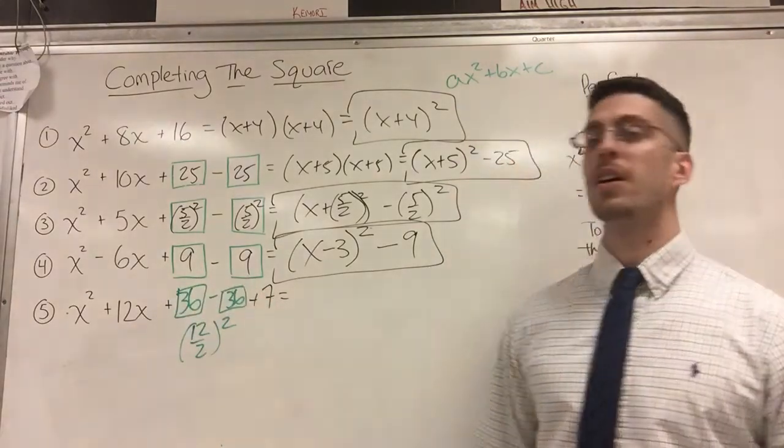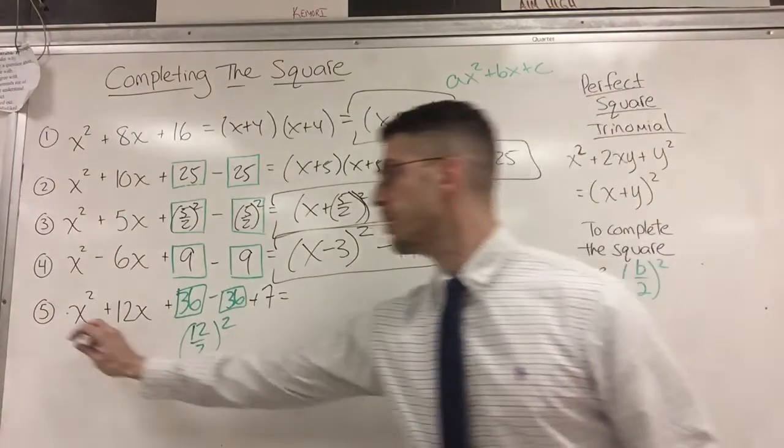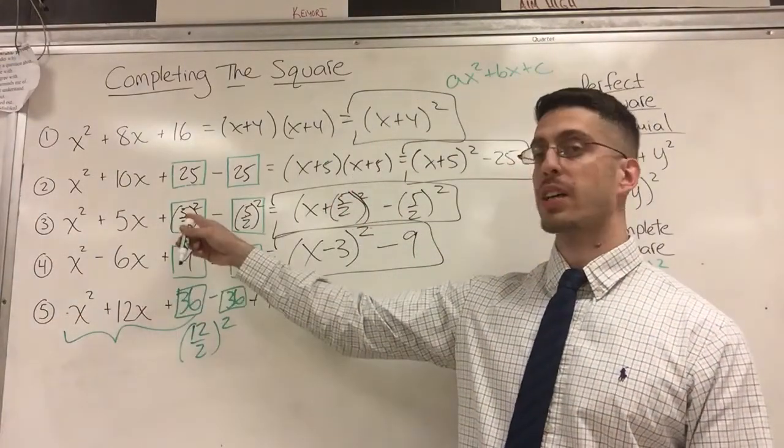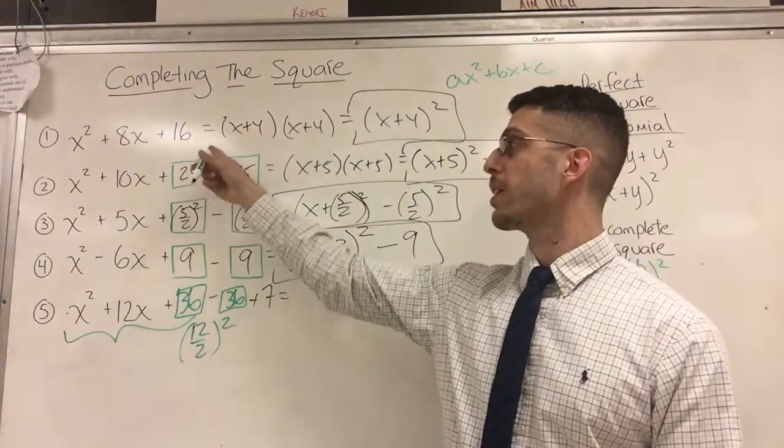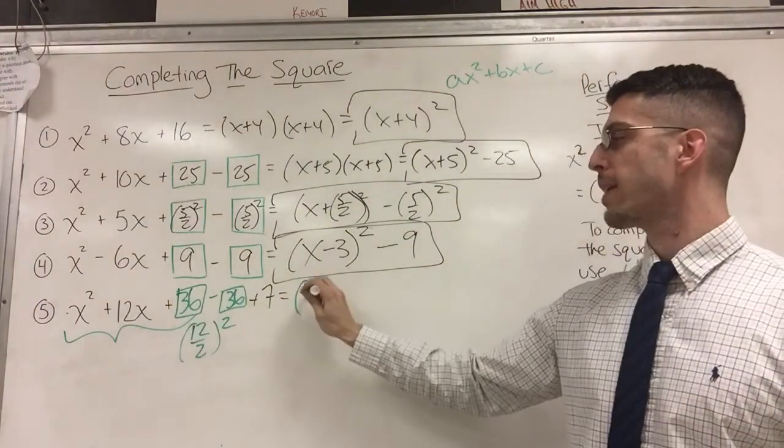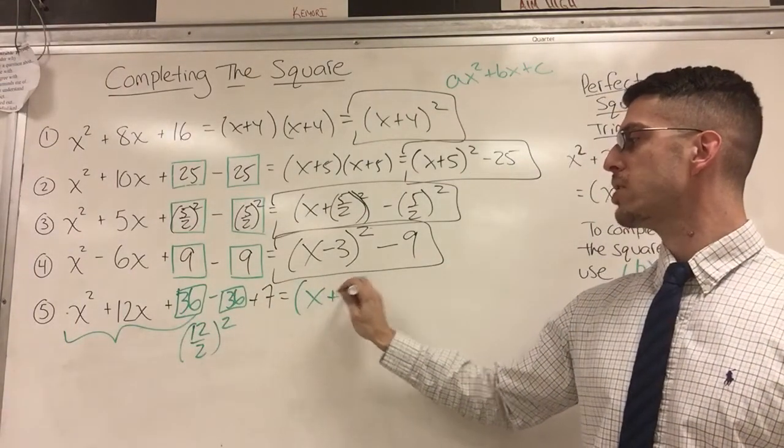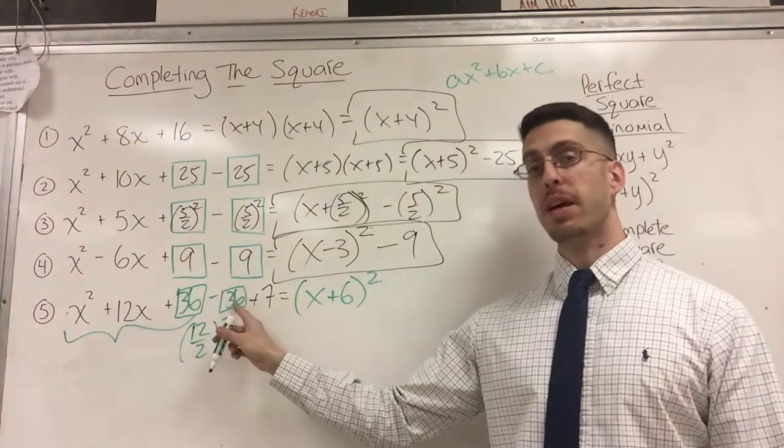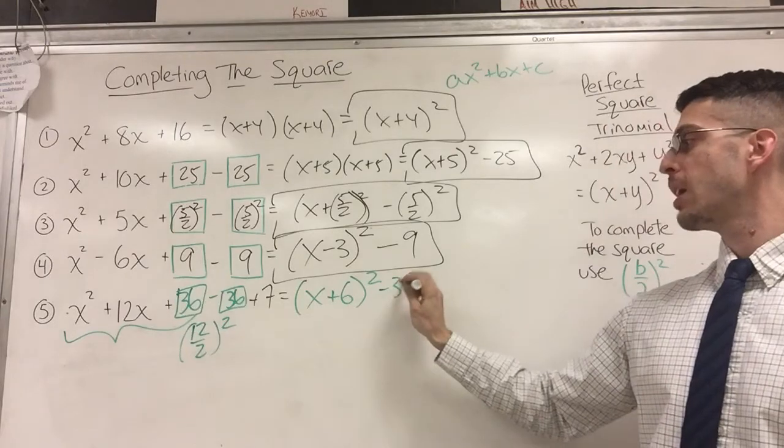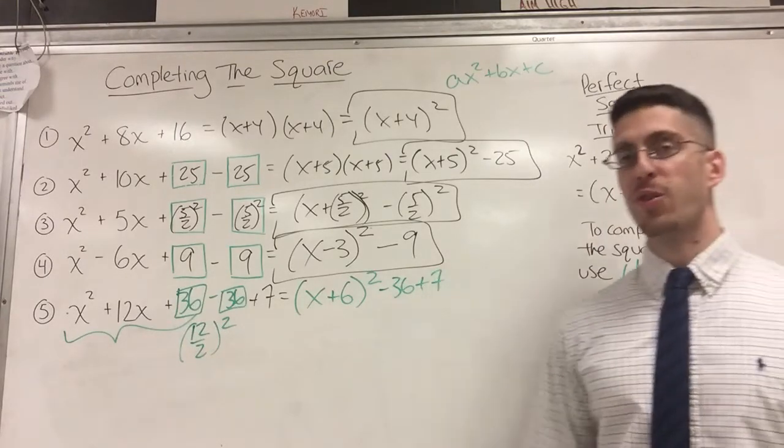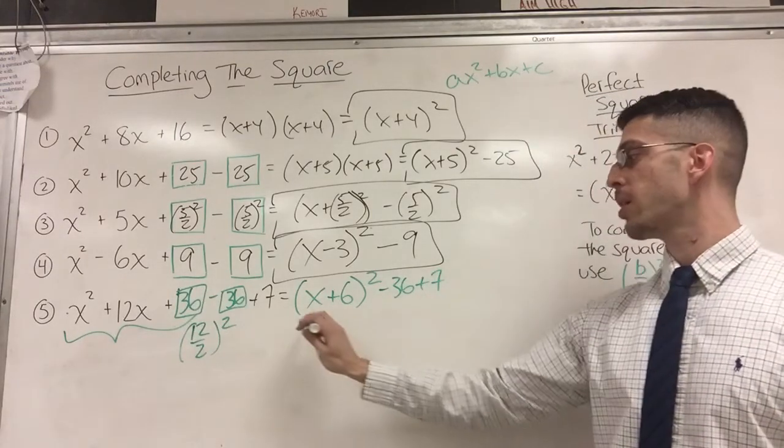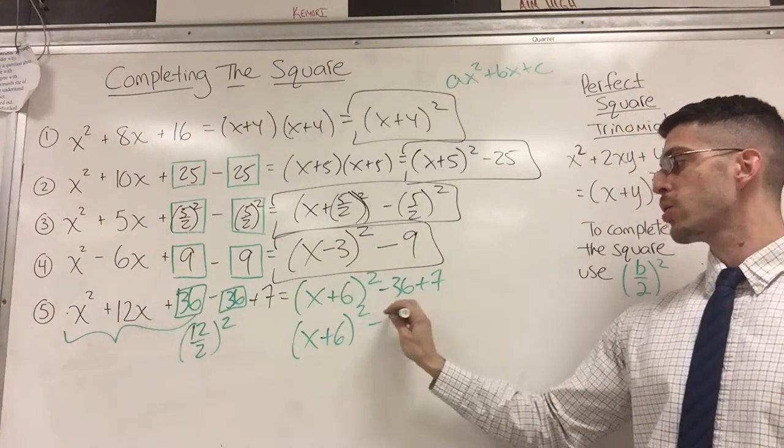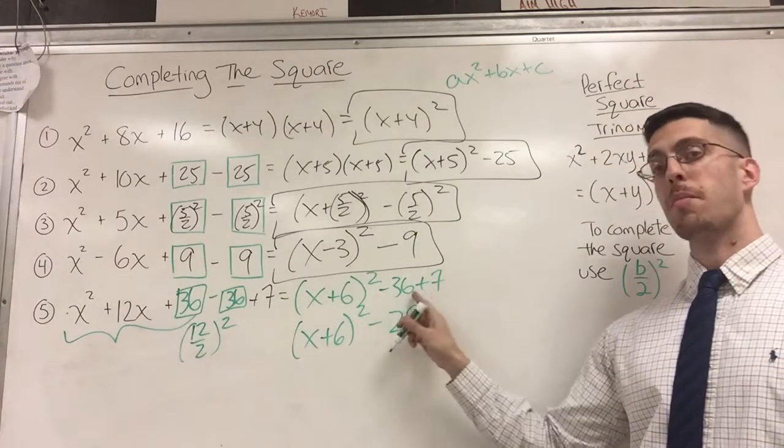Now, here is a perfect square trinomial. Just like I had here. Just like I had here. Just like I had here. And here. So, let's factor. That's (x + 6)². And then the -36 carries over. And the +7 also carries over. So now you've got to go one more step. Your final answer is (x + 6)² - 29. Because I combine my like terms.